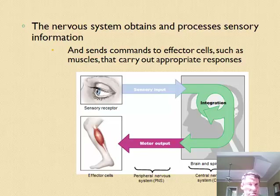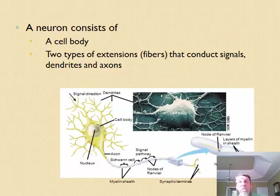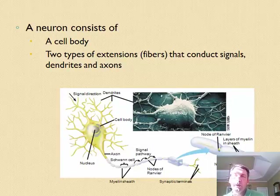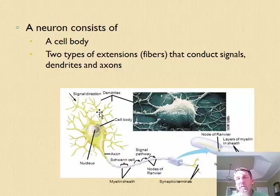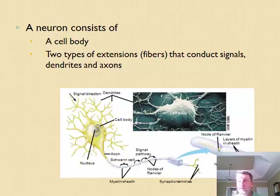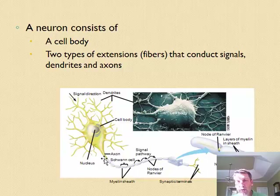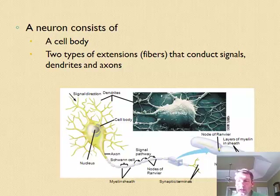The nervous system is made up of one type of cell called a neuron. Neurons are cells like any other, with a cell body, but they have extensions that make them unique — this is where signals are relayed. Short extensions are called dendrites and long ones are called axons. Axons are wrapped with individual cells called Schwann cells, which produce a pathway that helps speed up the signal.